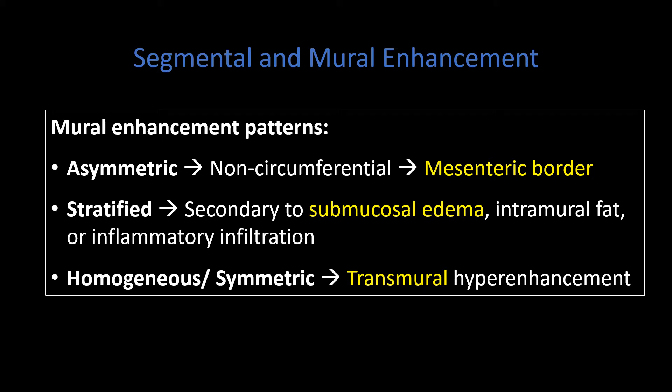Let's start with patterns of enhancement. Classically, Crohn disease affects segments of the bowel in a discontinuous manner. Commonly the terminal ileum or the distal ileum is involved, with multiple segments involved with intervening segments of relatively normal bowel. When looking for a segment involved by active inflammation, we can see asymmetric enhancement — instead of seeing abnormal enhancement circumferentially around the bowel, there tends to be selective hyper-enhancement along the mesenteric border of an affected segment.